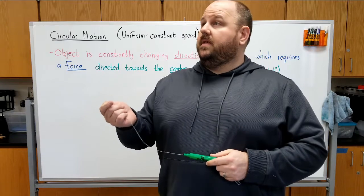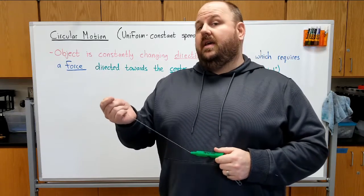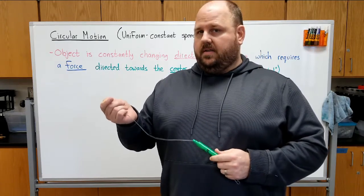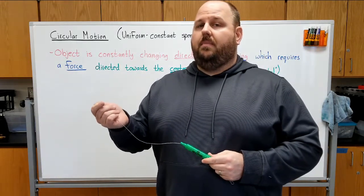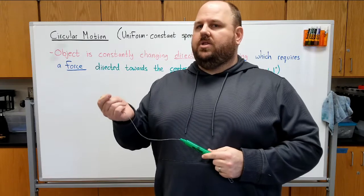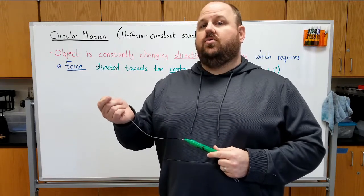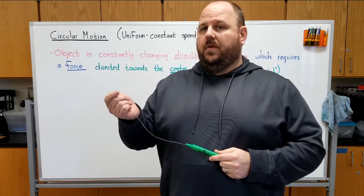The speed of this thing is relatively constant. Its velocity, however, is constantly changing. The thing we need to remember is that velocity includes both a magnitude and a direction. And so what's changing in circular motion is the direction that the object is moving.